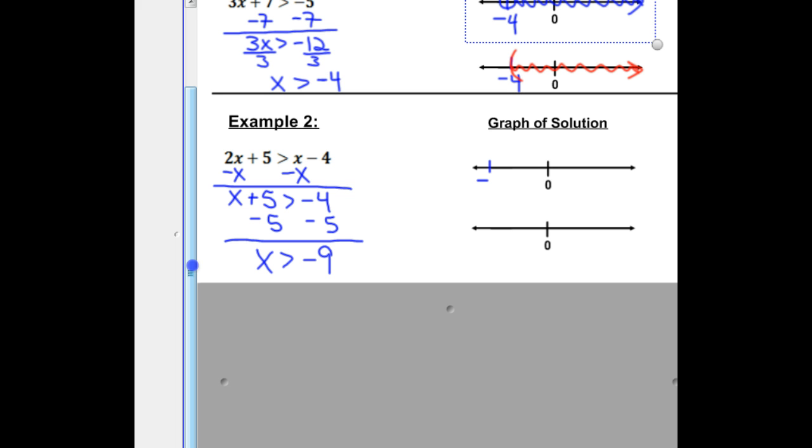So again, we'll put in our negative 9, and we can go with the open circle and shading to the right. Or we could go with our parenthesis and shading everything to the right.